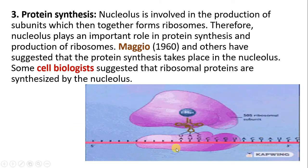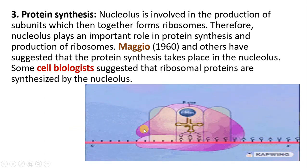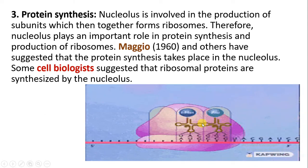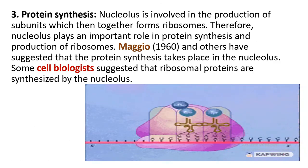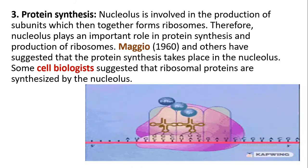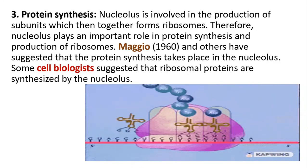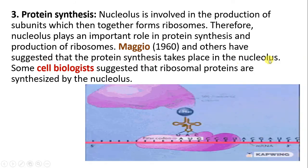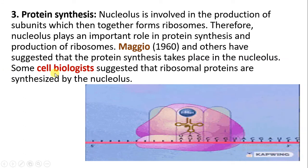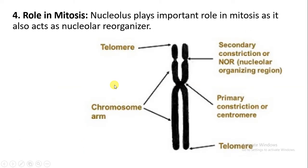The next function is protein synthesis. Here you can see the mRNA, the two subunits of the ribosome — small subunit and the larger subunit — and the tRNA along with amino acids coming together for protein synthesis. Nucleolus is involved in the formation of the subunits of the ribosome, and the subunits come together for protein synthesis. Scientists including MAGEO suggested that protein synthesis takes place in the nucleolus. Nucleolus also plays a very important role in mitosis, acting as a nucleolar reorganizer.